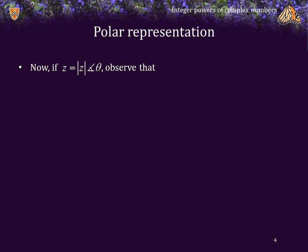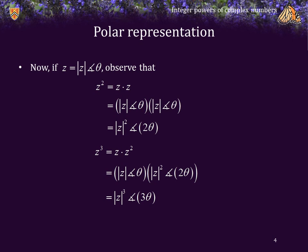If z is equal to its magnitude phase theta, then z squared is z times z. Multiplying the magnitudes and adding the angles, we get magnitude squared phase 2 theta. z to the 3 is just z times z squared — multiplying the magnitudes and adding the angles gives us magnitude cubed phase 3 theta.